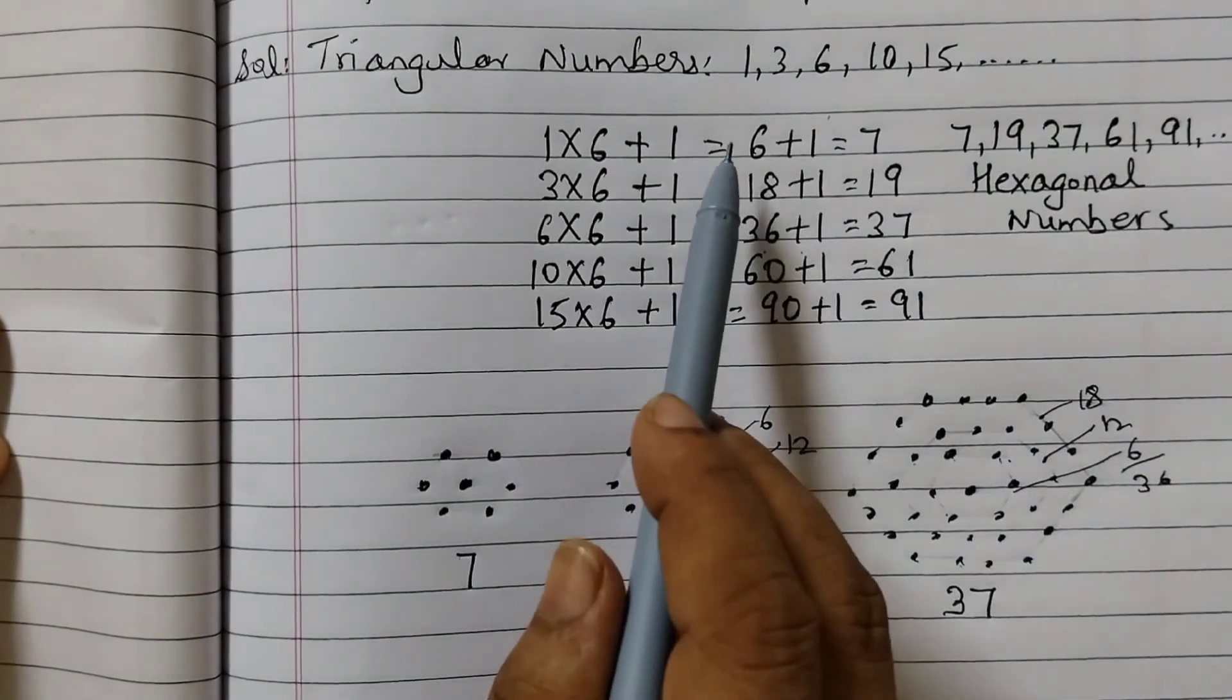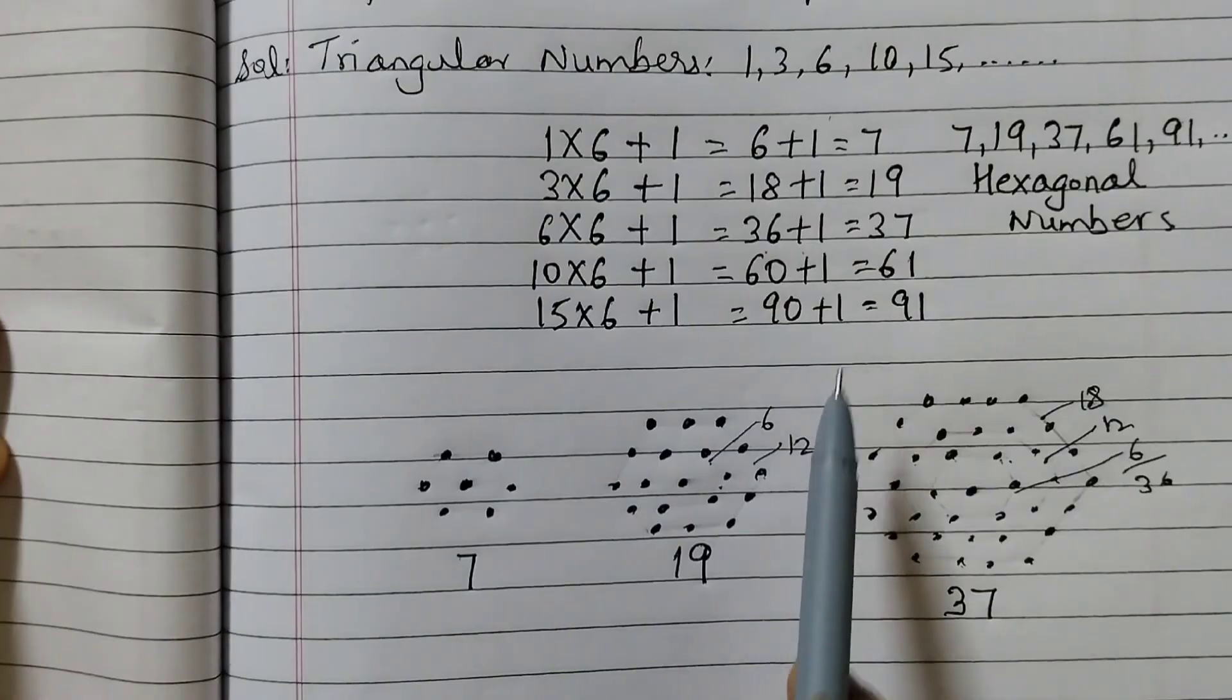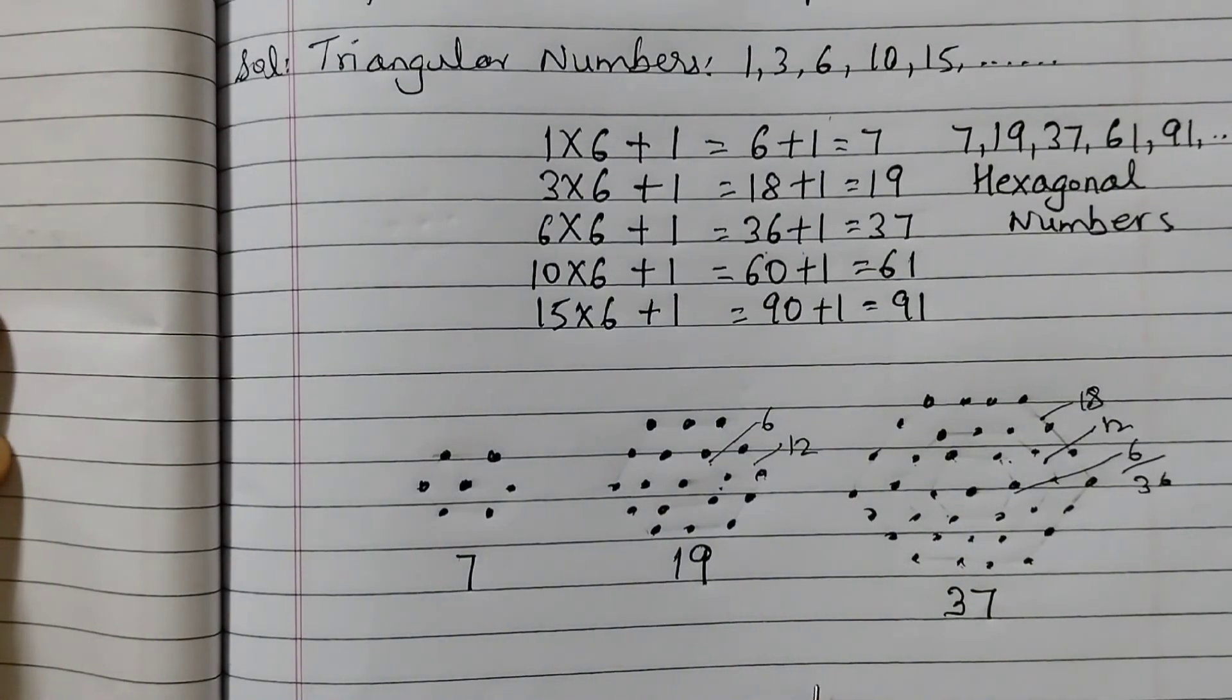So we see here how adding these multiples of 6 plus 1 gives us hexagonal numbers. Hope the concept is clear to you. Thank you.